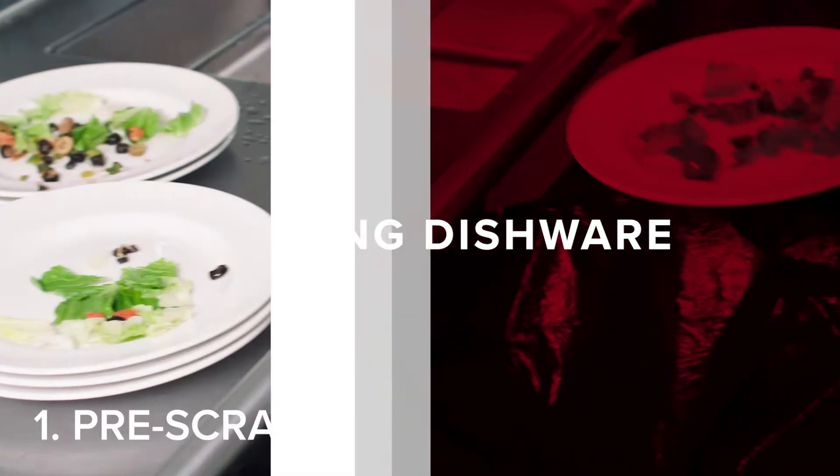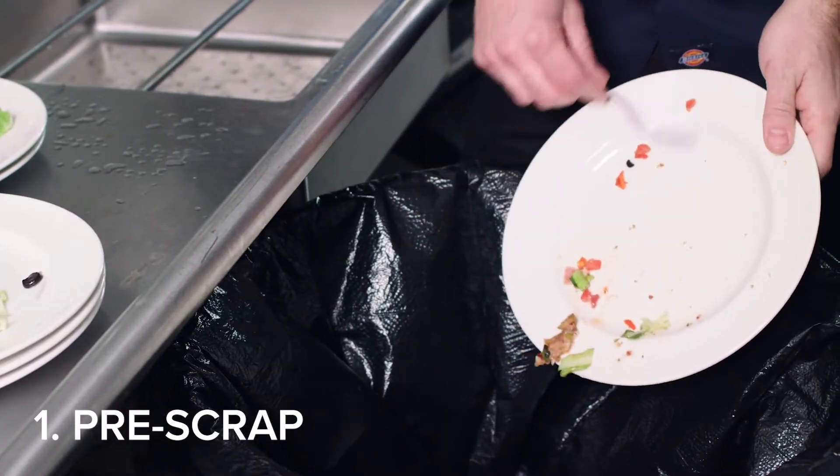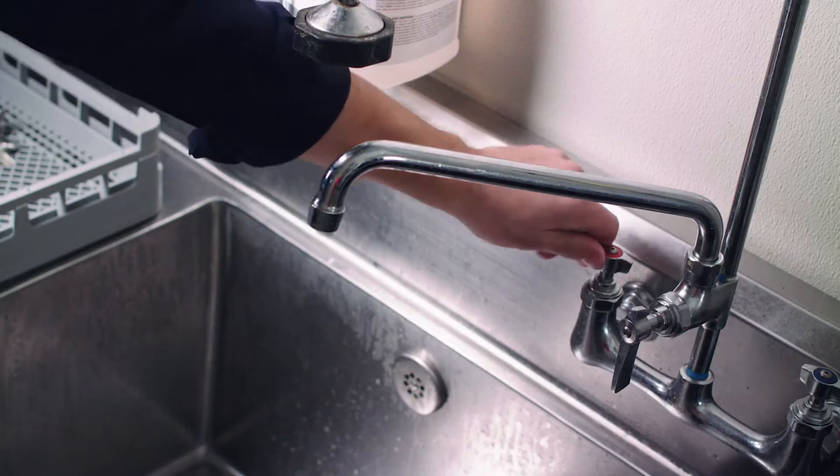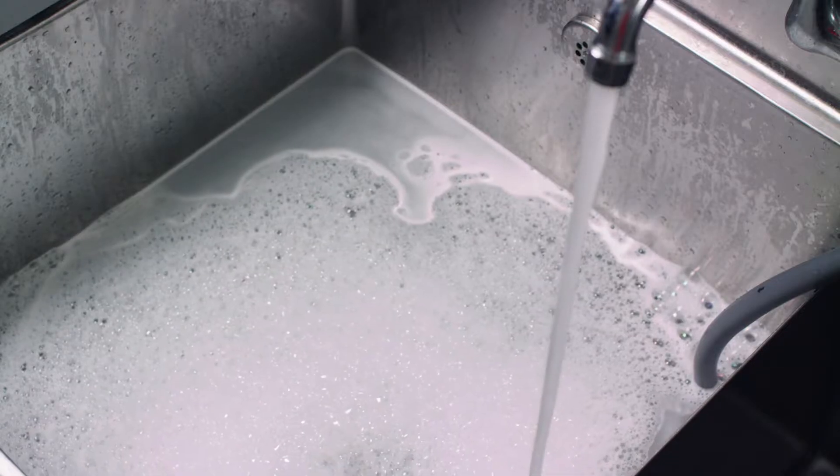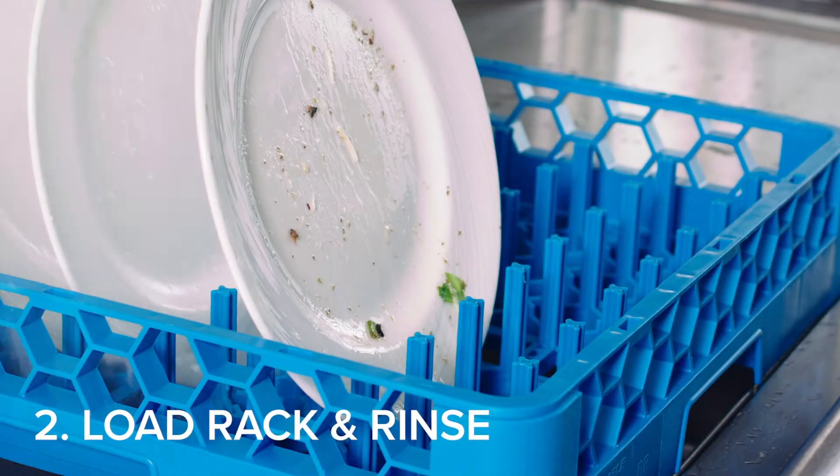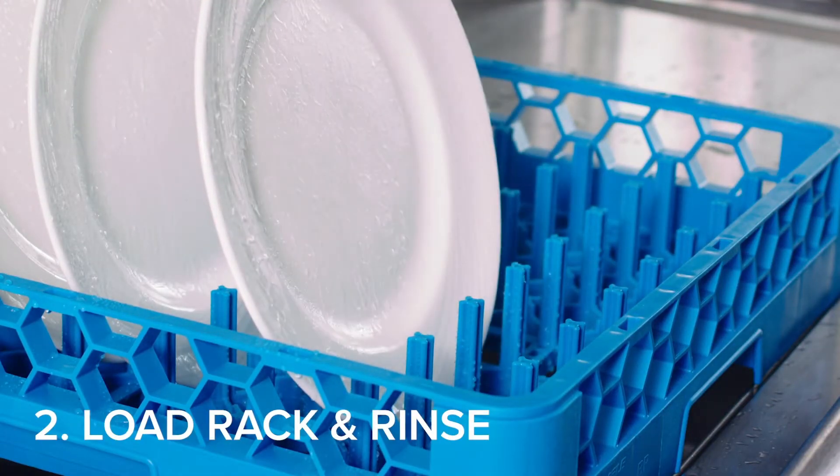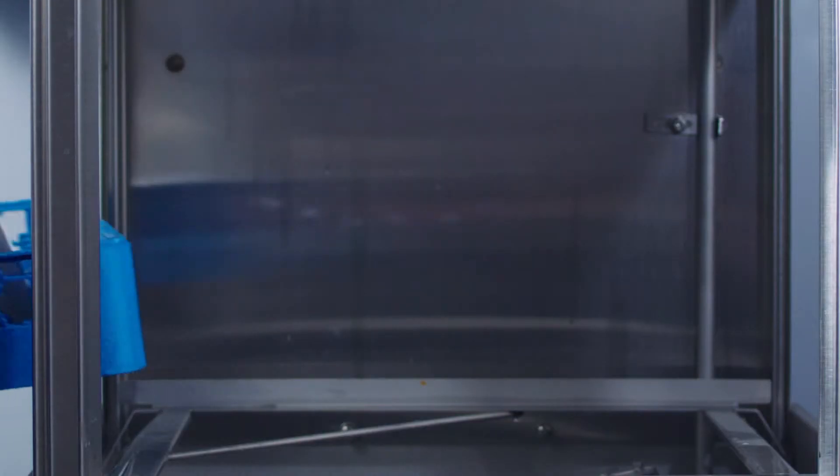Washing dishware. Begin by hand scraping dishware to remove food soil and other debris. Heavily soiled dishware may require pre-soaking. Place the pre-scraped dishware into a peg rack and rinse thoroughly. Do not overload the rack.